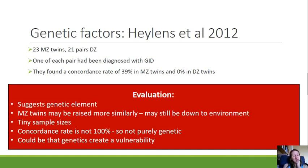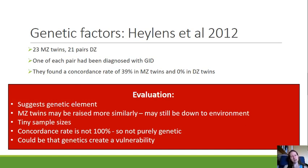This does suggest a genetic element, as the concordance rate is higher where genetics are identical. However, twin studies aren't perfect — non-identical twins may be boy and girl and raised quite differently, while identical twins may be raised very similarly, so differences could still be down to environment rather than genetics. There are also really small sample sizes: 23 pairs is very small, which may affect generalisability and make findings more susceptible to outliers.